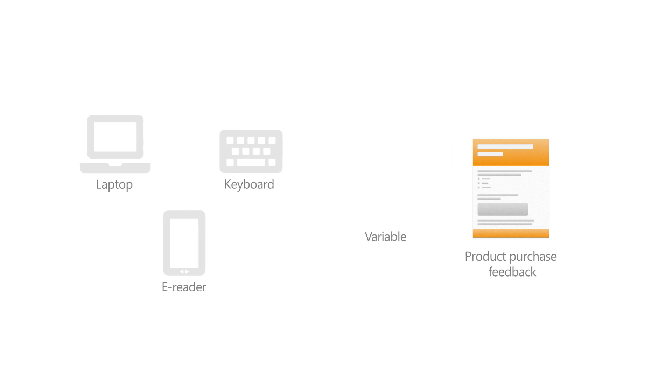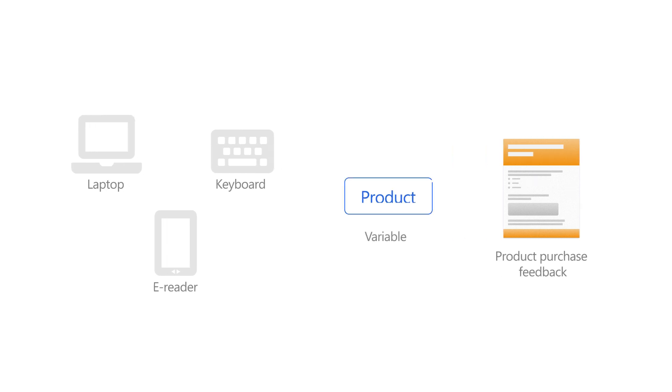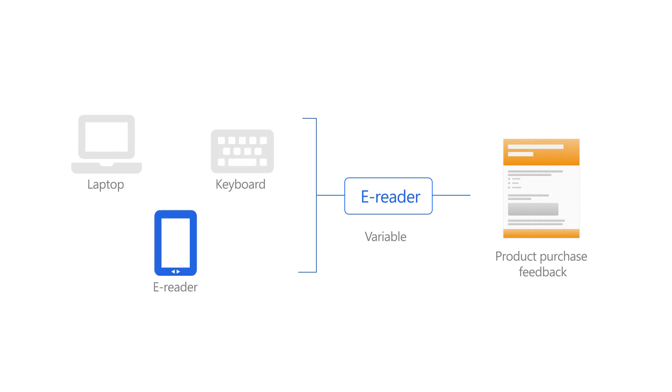You've created a survey that takes feedback for a purchased product. The company sells three products: a laptop, keyboard, and e-reader. You have created a variable named product and used it in the questions. The survey variable can be populated through Power Automate when you send the survey, and the product name will be automatically inserted in the questions.